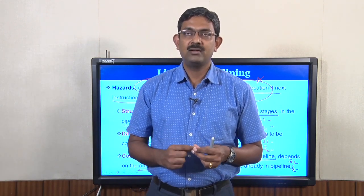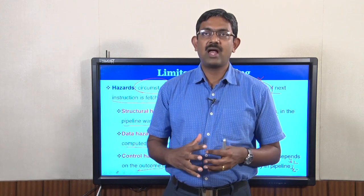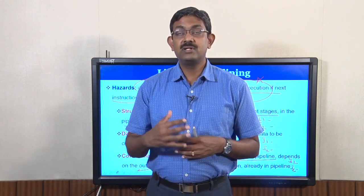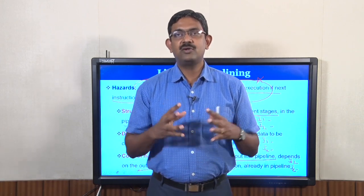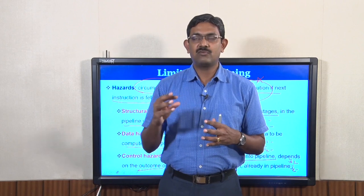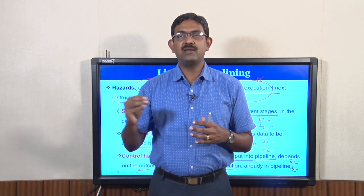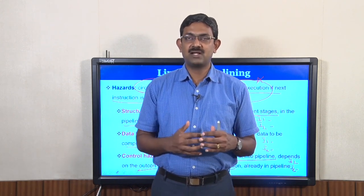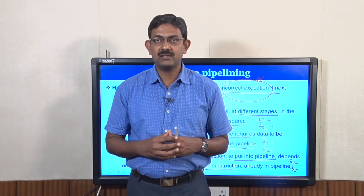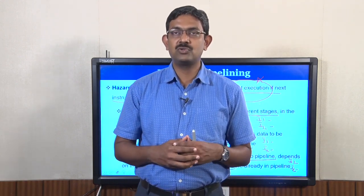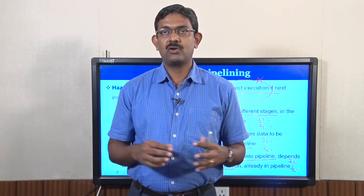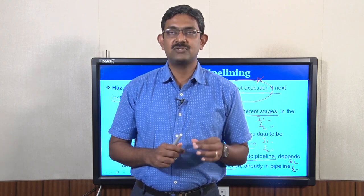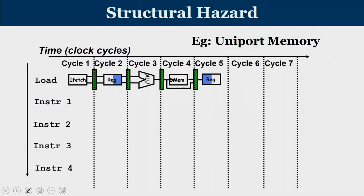Ideally a pipeline should have additional support facilities to detect whether there is a hazard or not — there should be a hazard detection circuit. The duty of this circuit is to find out whether bringing the next instruction will cause an incorrect execution, and if so, what kind of hazard it is, and what steps the control unit must take to prevent incorrect execution. Let us now understand each hazard more deeply.